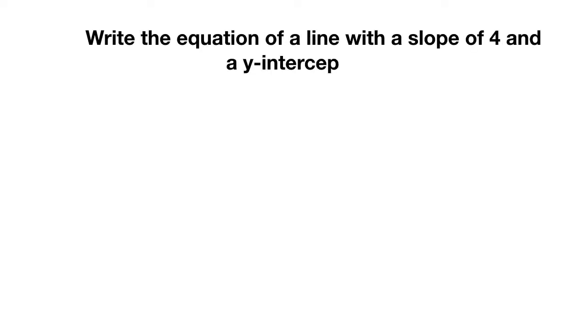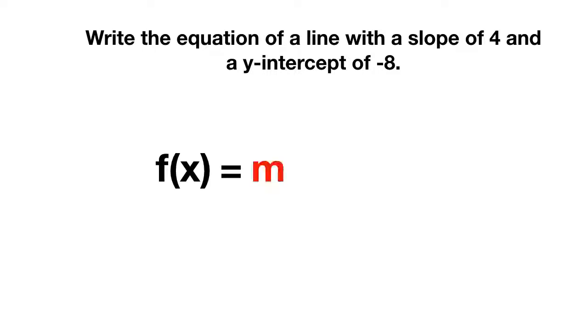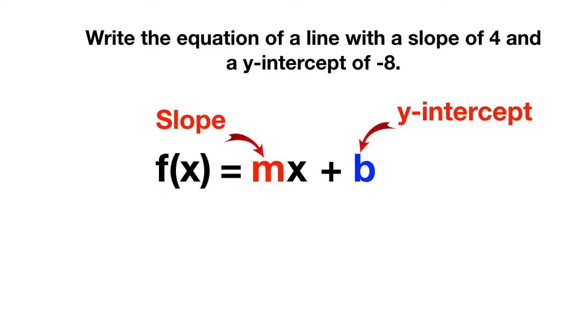Today we're learning how to write functions in slope-intercept form. If you're asked to write the equation of a line with a slope of 4 and a y-intercept of negative 8, in slope-intercept form we write f of x is equal to mx plus b, where m represents the slope and b represents the y-intercept.